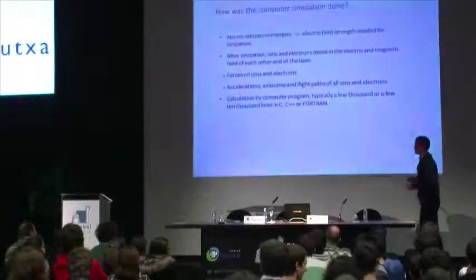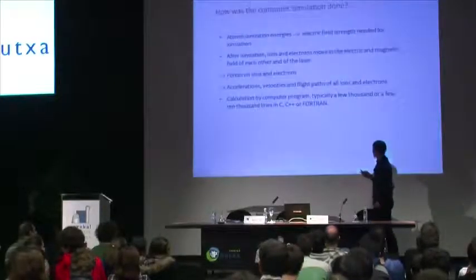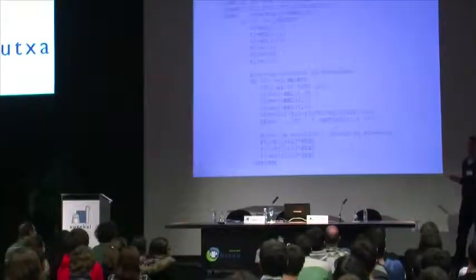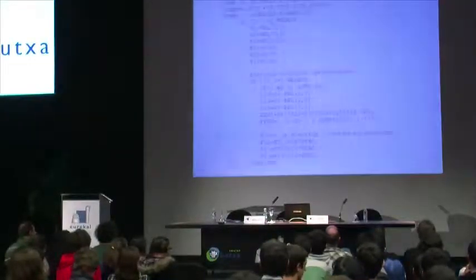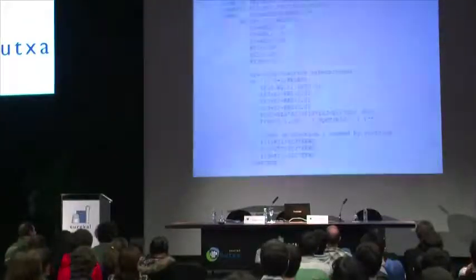If we calculate the electric field at each electron and ion, we have the forces on each ion and electron, we know the accelerations, the velocities, and we can calculate the entire flight path. For a practical calculation, we write a computer program which consists of a few 10,000 lines in C, C++, or Fortran. The computer simulation runs on powerful computers, and it takes mostly between a few days and a few months of computation time.